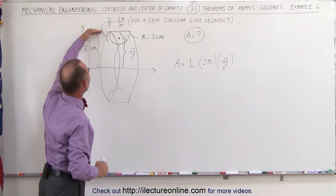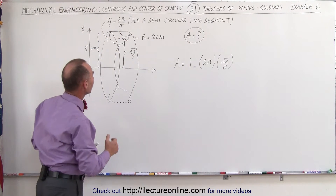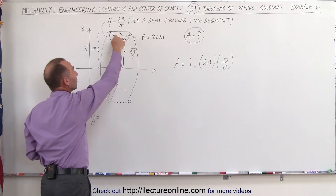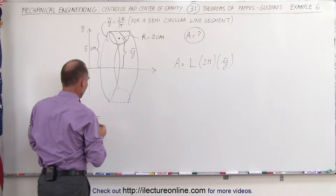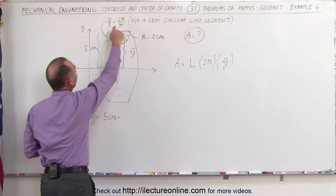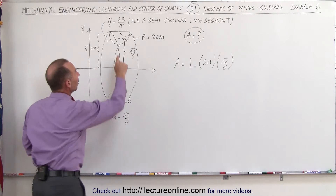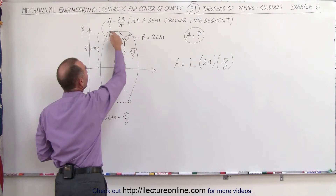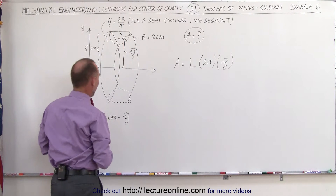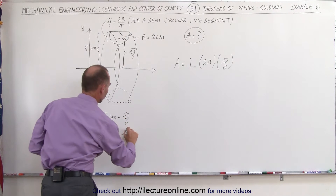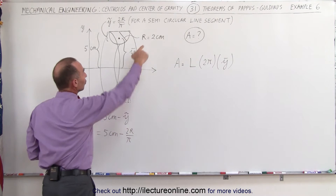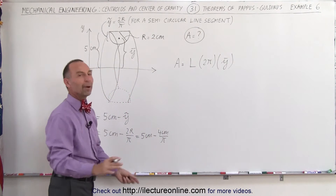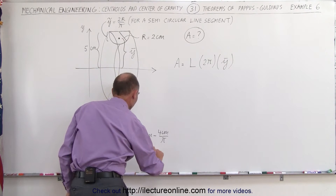Assuming the distance from the x-axis to the center of the circle is 5 centimeters and the radius of the semicircle is 2 centimeters, to find the y-coordinate of the center of mass of this wire relative to the x-axis we take the full distance — 5 centimeters — and subtract from that the center of mass of the semicircle relative to the center line, which is 2r divided by π. So this becomes 5 centimeters minus 2r divided by π. With r equal to 2 centimeters, this becomes 5 minus 4 divided by π.